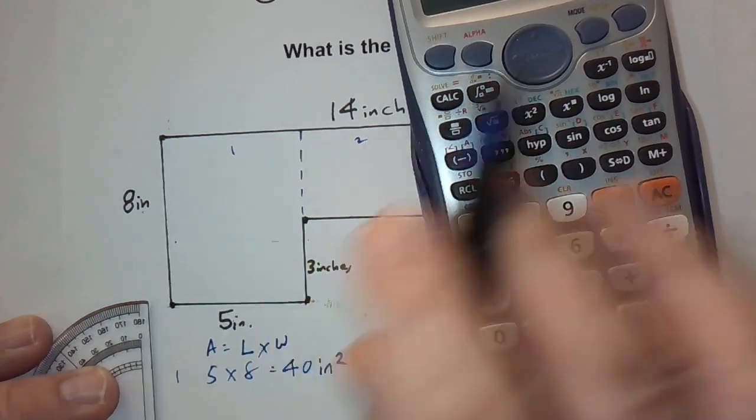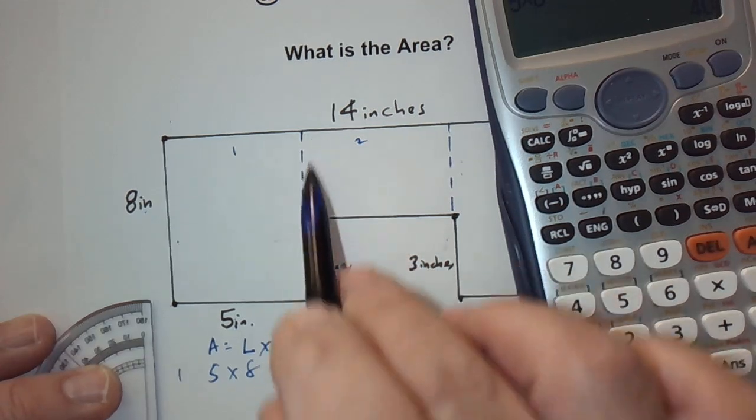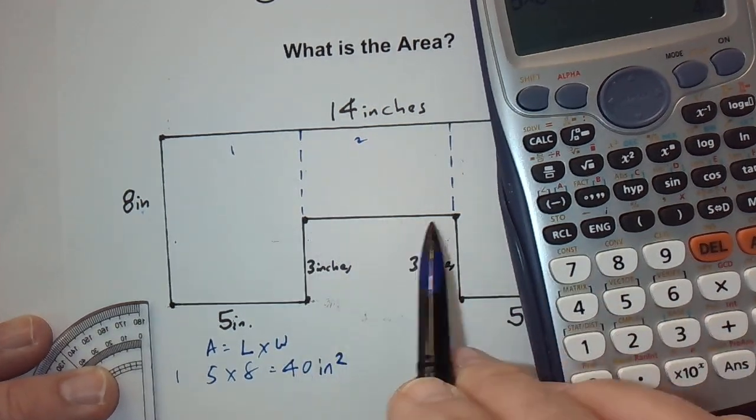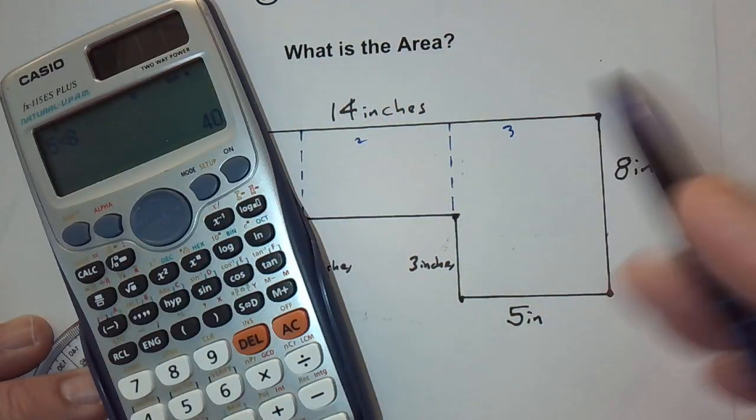I'm going to skip over number two for a moment because we're missing some information. We don't have this length, and we don't have this length. It's not listed. Let's go ahead and do number three, though.